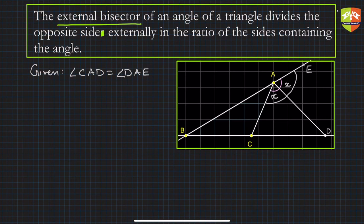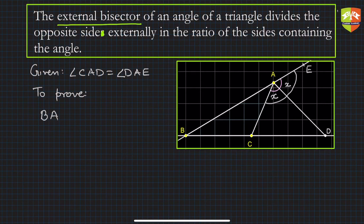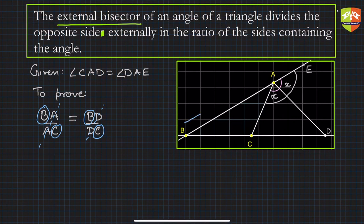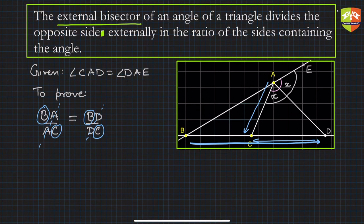We have to prove what is required — similar to the internal angle theorem, we need to prove that BA upon AC is equal to BD upon DC. Notice the order of writing: BA, then AC, and similarly BD then DC. Writing in this particular order becomes convenient to remember the theorem as well.